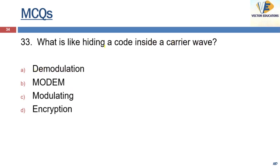What is hiding a code inside a carrier wave called? It is called modulating. At the receiver end, we demodulate and interpret the data. The device used for this purpose is called a modem — that is, modulator-demodulator.